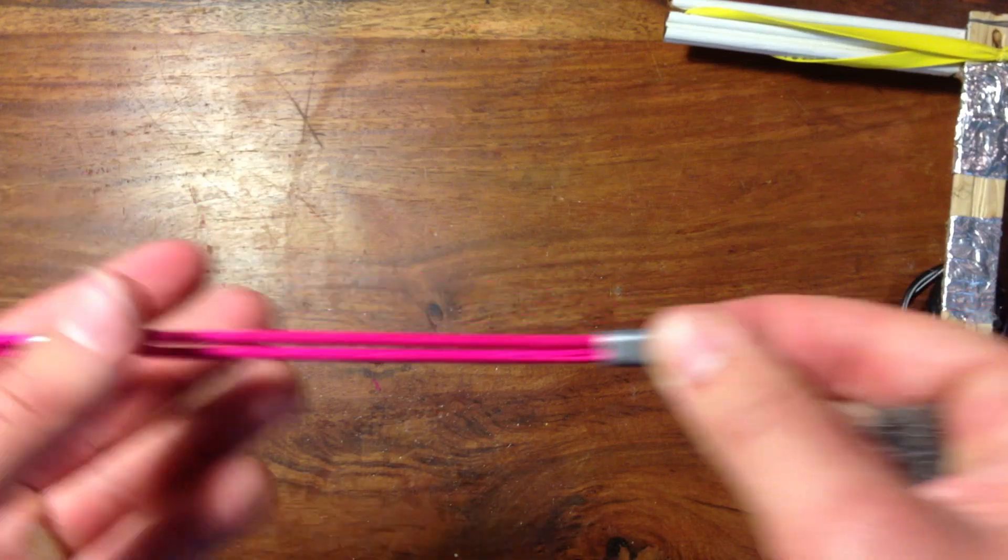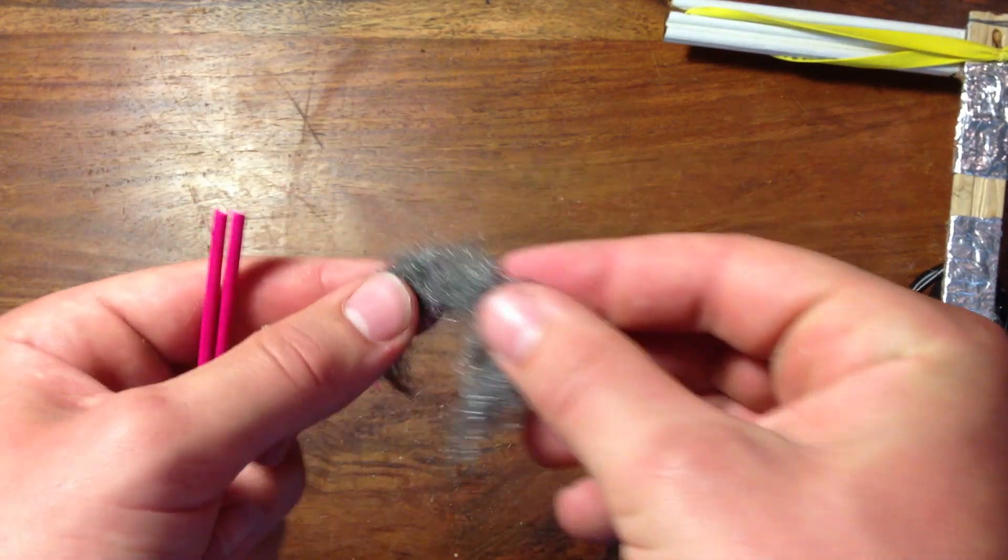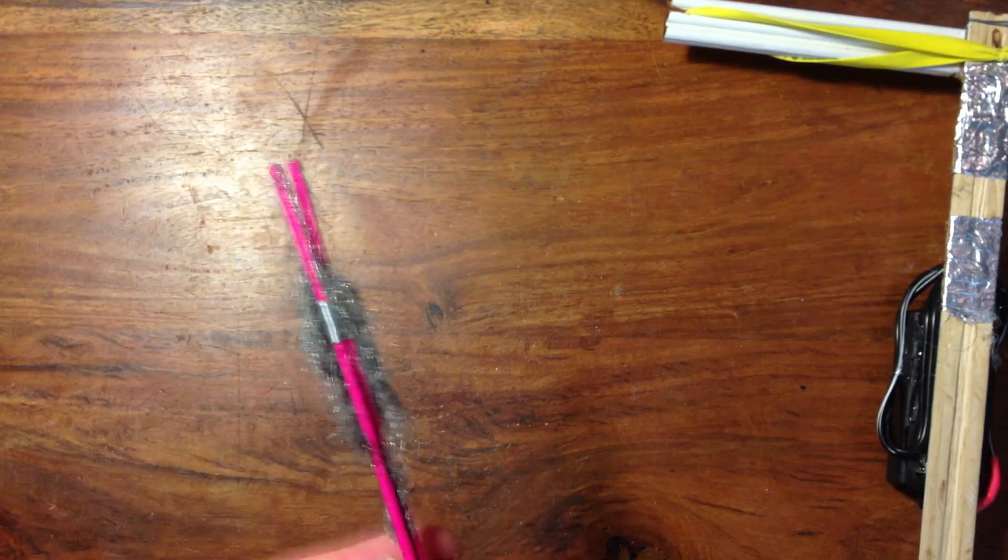To make the arrow, take two skewers and attach them together. Take some steel wool and pull it apart to give it more surface area. Then stick it between the two skewers.